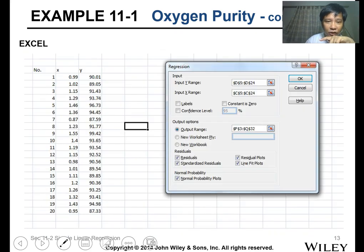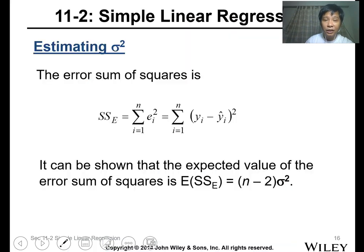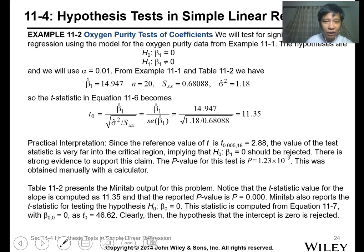Using the calculator, upon calculation this is 11.35. This will also appear automatically—you don't need to compute it. It appears here in the t-statistic for the slope, which is 11.32, or you can find it in Minitab. This is the 11.35 value. This is the p-value of your calculation.